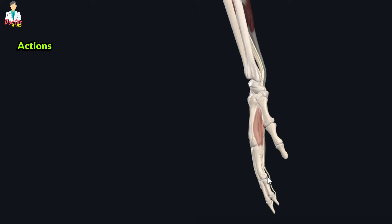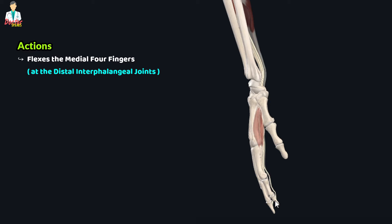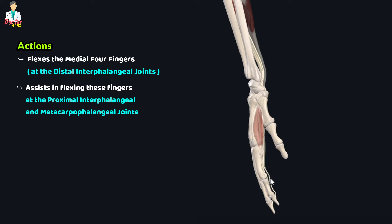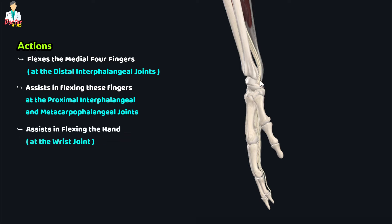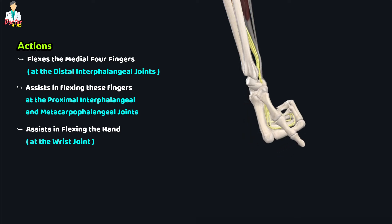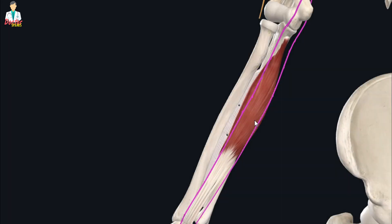If we study the actions performed by the flexor digitorum profundus muscle, on contraction this muscle flexes the medial four fingers at the distal interphalangeal joints and assists in flexing these fingers at the proximal interphalangeal and metacarpophalangeal joints. The tendons of insertion also cross the wrist joint, so this muscle also assists in flexing the hand at the wrist joint.